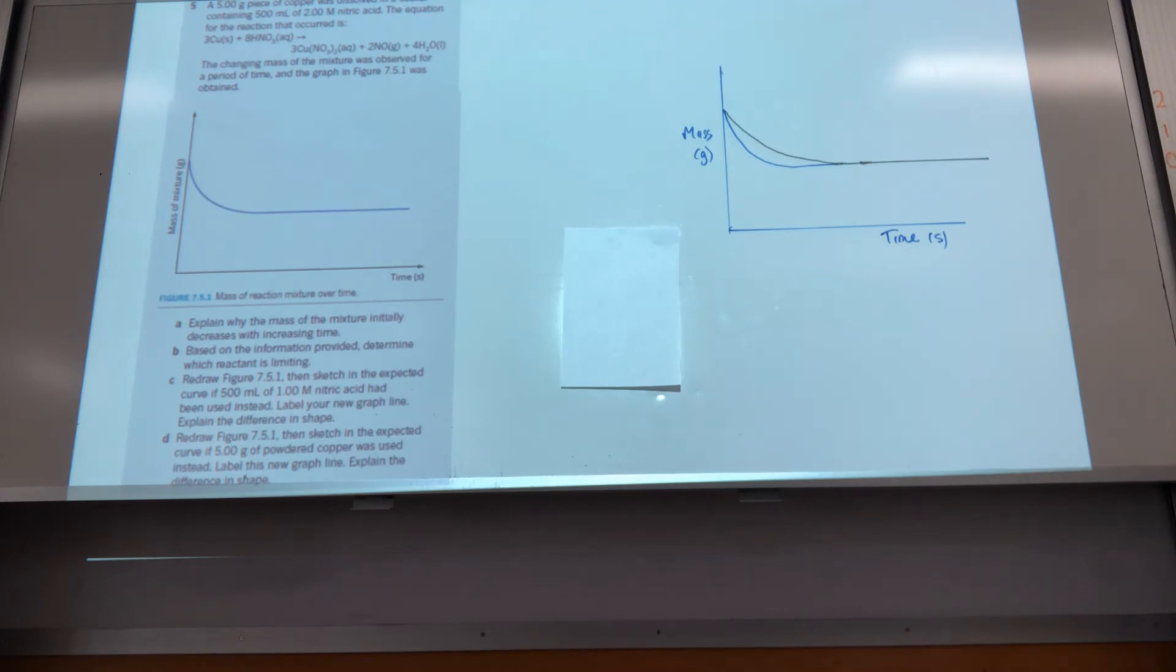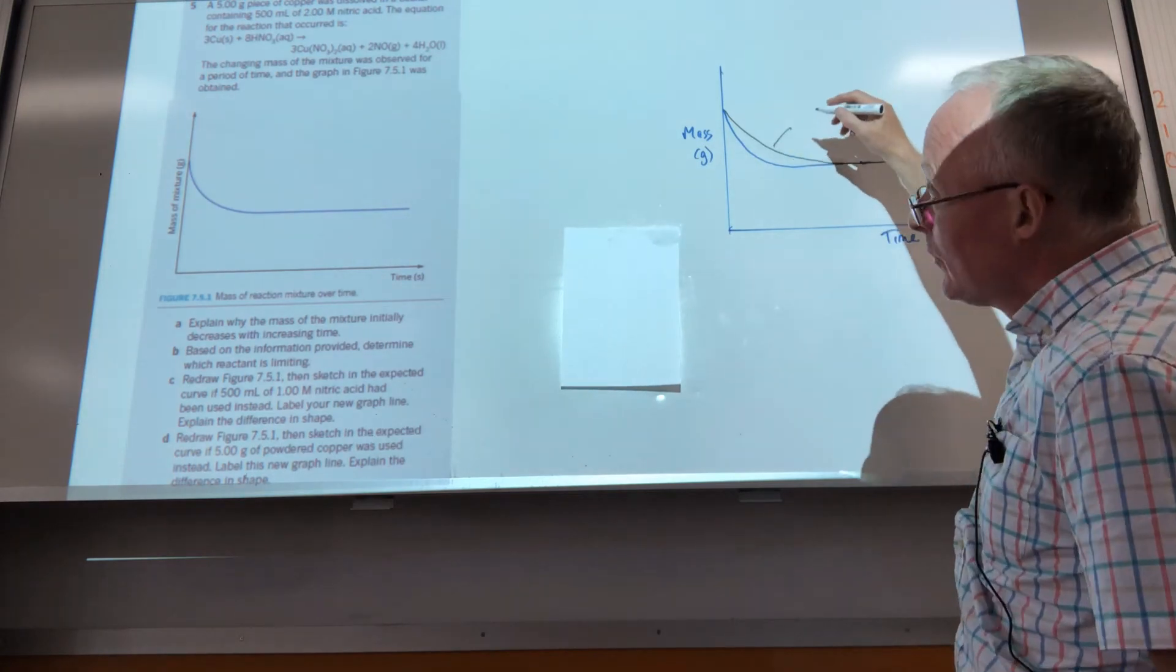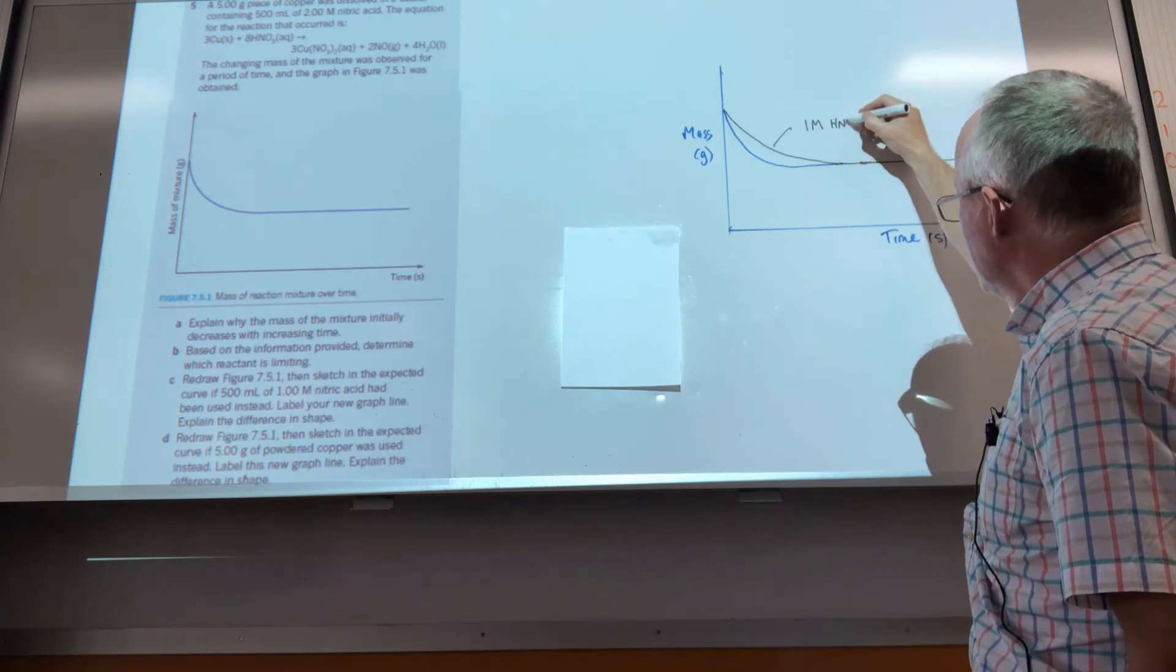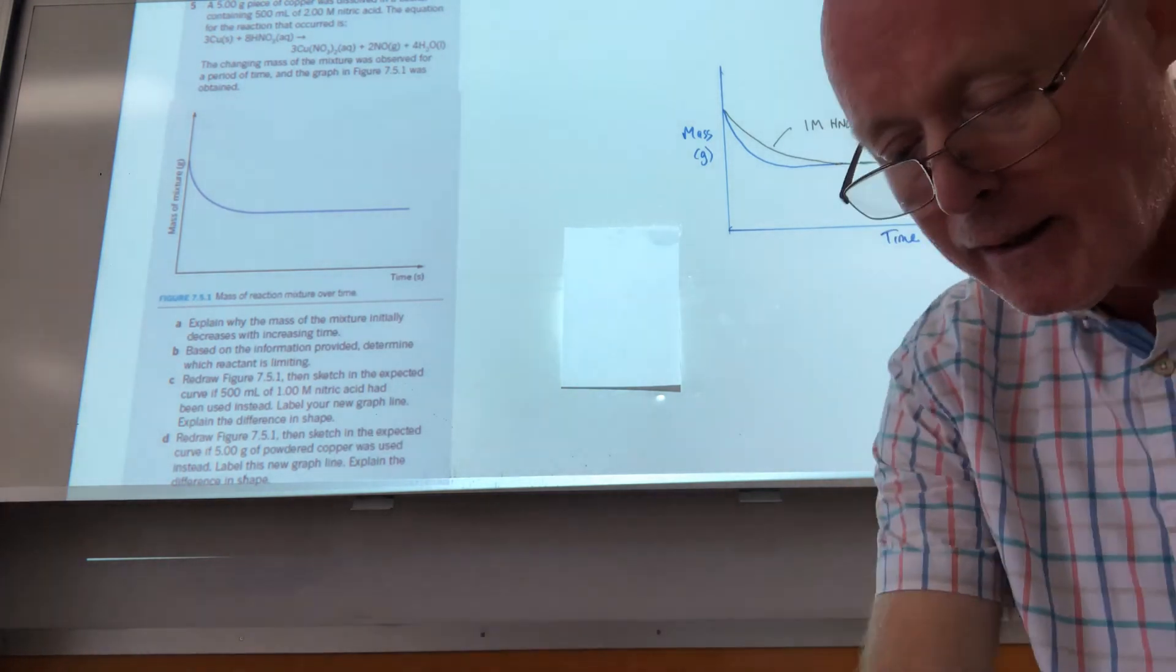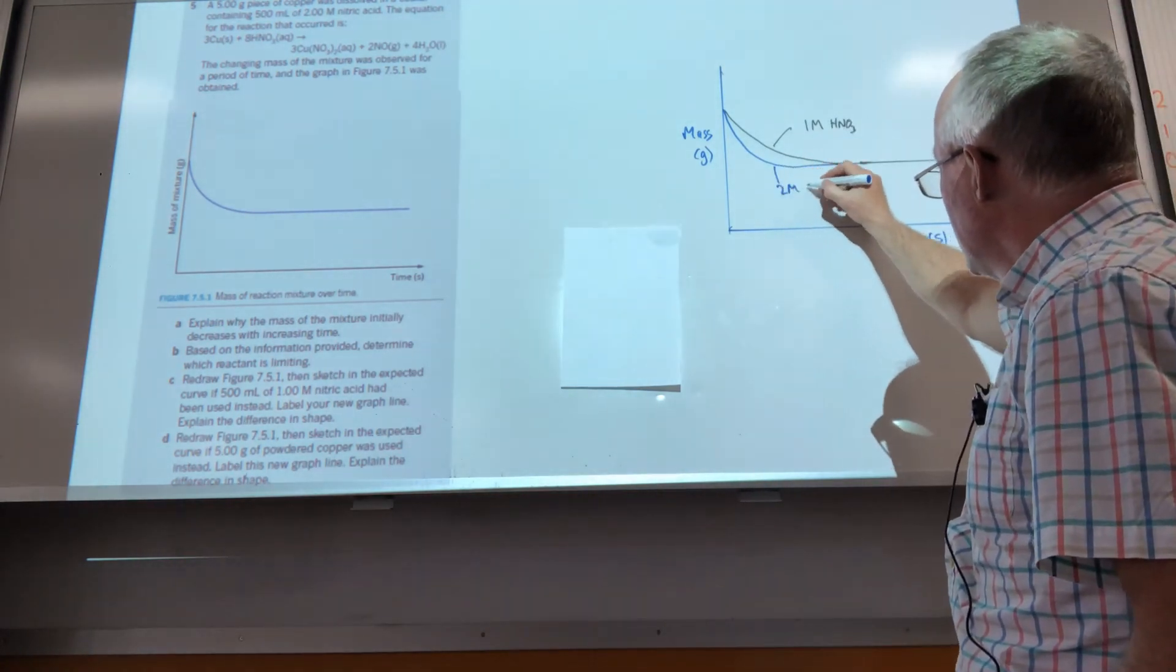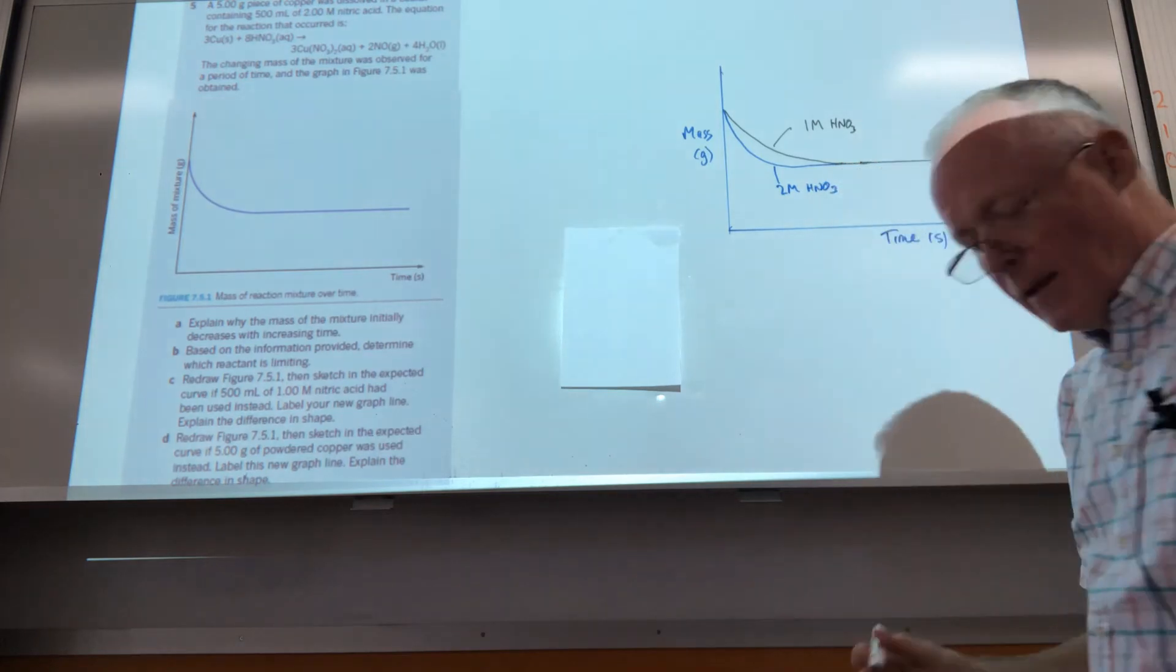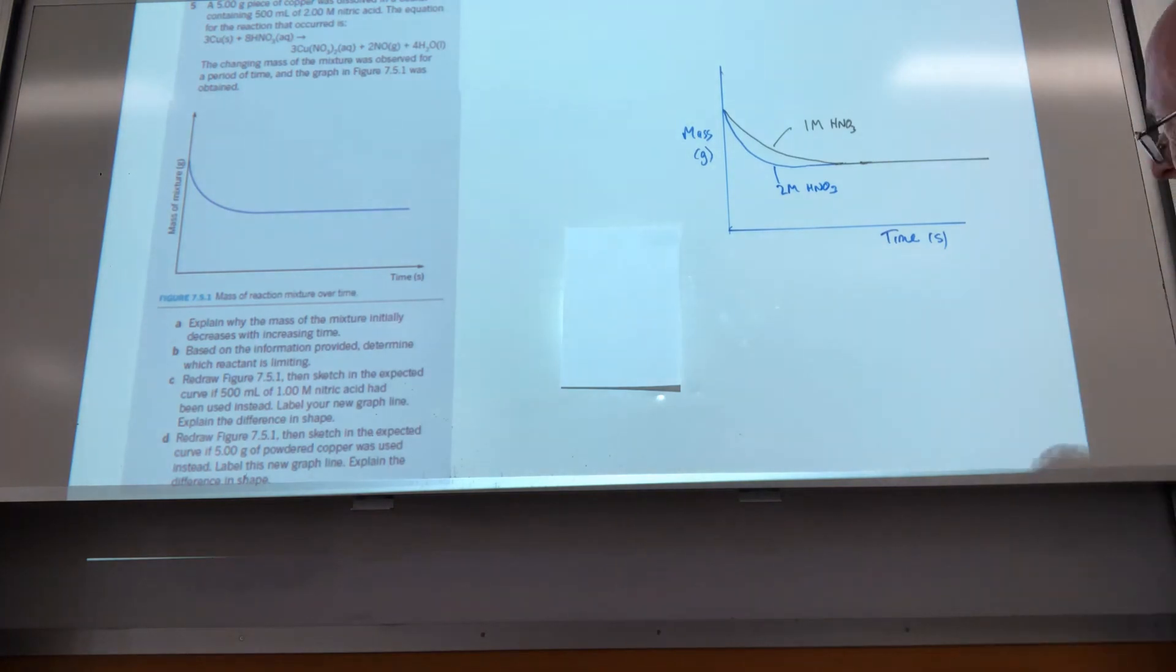Final point of course is to label the two lines. So this one is one molar HNO3, and the other one is two molar HNO3. Now all these things may seem fairly simple, but it's easy to get into bad habits of being a little bit shoddy with your graphs, so make sure you don't.